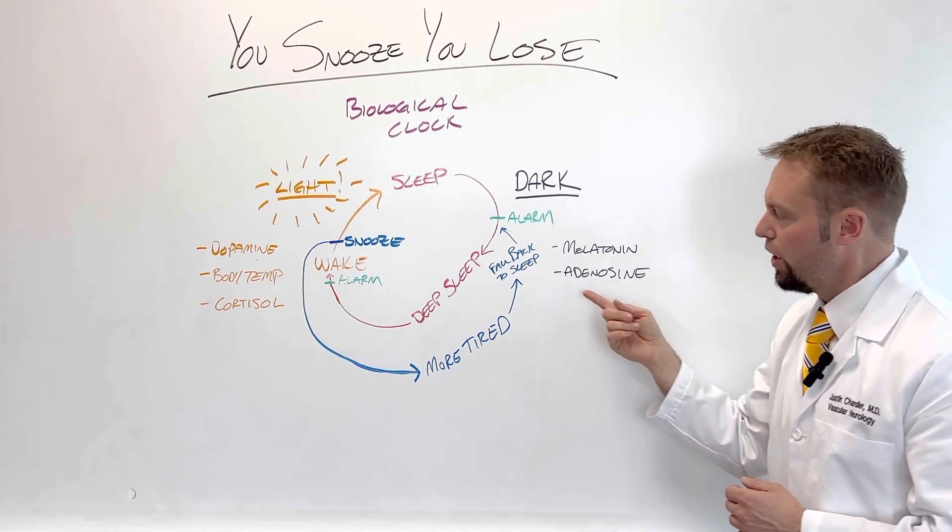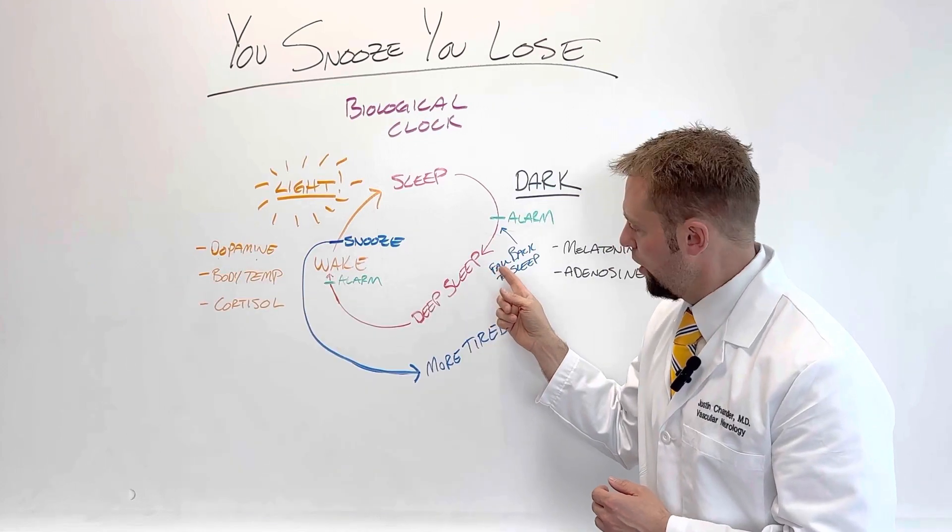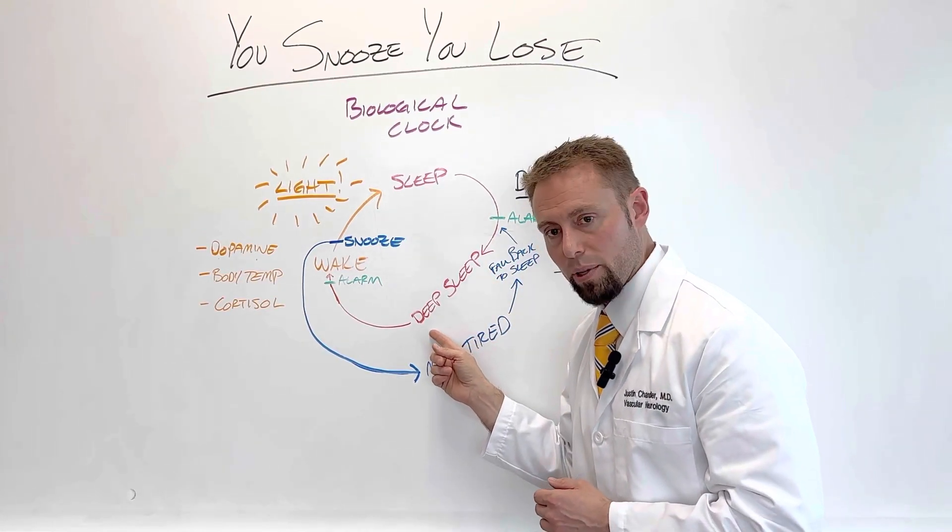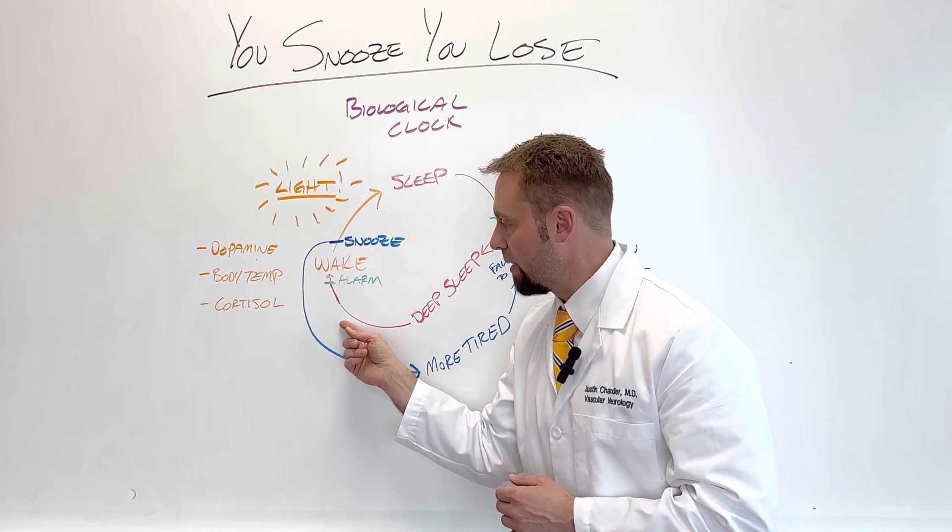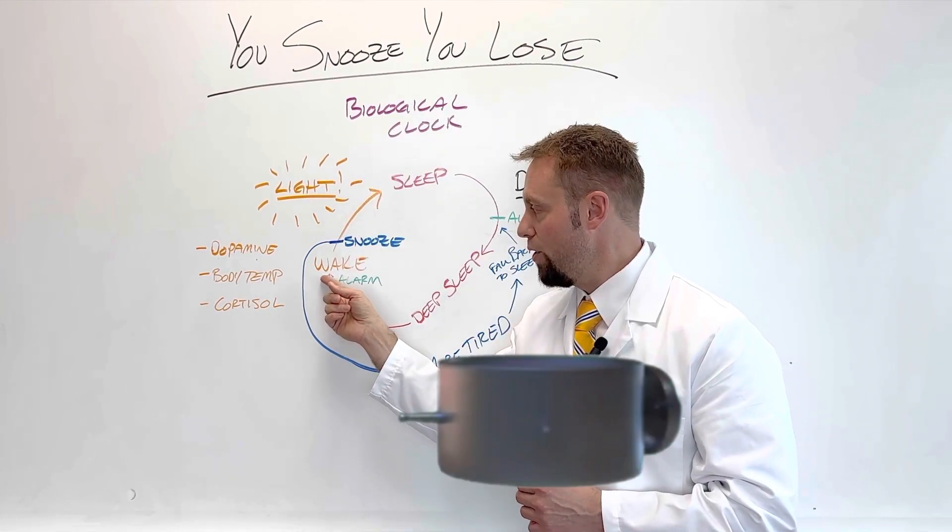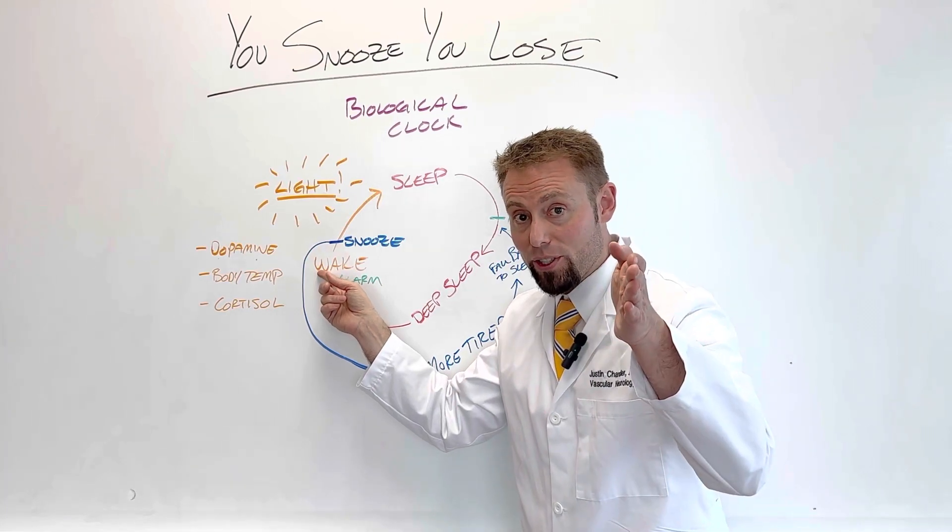Your adenosine changes. You get tired, you go to bed, you fall asleep. You then end up getting into a deep sleep. As you're starting to go through that sleep cycle and you've set an alarm the day before, that alarm goes off and then you wake up.